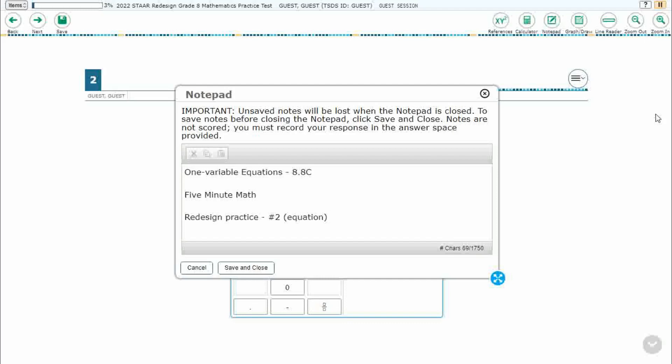Hello and welcome to 5-Minute Math. Today we are looking at the 8th grade concept of one variable equations. This is standard 8.8c in the great state of Texas and we are using item number 2 off the Redesign Practice Online Start Test, which is a new item type called equation.